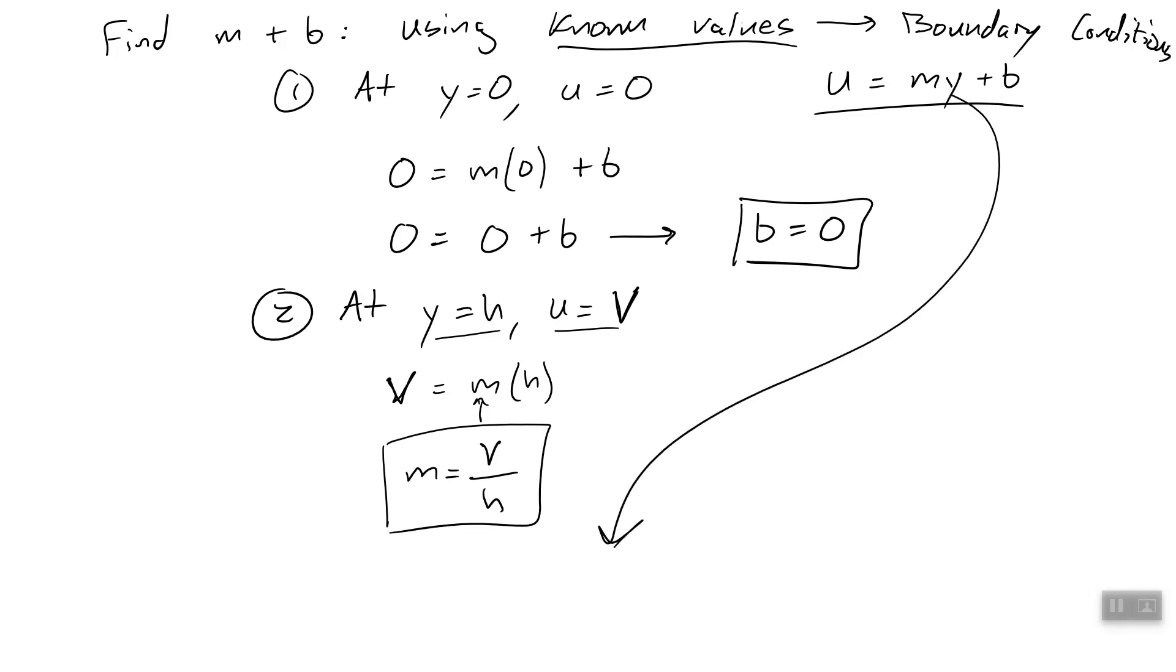So now we can bring this back down and say u equals m, v divided by h, times y, plus b, which is zero. So this right here is our velocity distribution. This tells us our x velocity, remember u is the x component of velocity, and it gives us that x component of velocity as a function of y. So you pick a y value, I can tell you how fast the fluid is moving in the x direction at that y value using this equation.